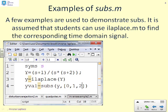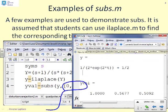So it says yval equals subs y. And then the key thing to note is what we've put down here, where we've written 0, 1, 2. Those are the values of the independent variable that we're going to use. So that's like saying find y(0), find y(1), and find y(2).